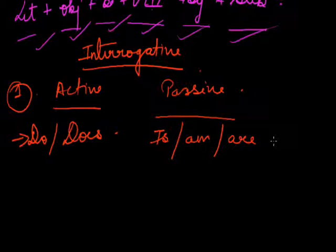If a question starts with 'does': 'does a good posture give proper shape?' The passive sentence is 'is proper shape given by a good posture?' So if a question starts with 'do' or 'does,' the passive is going to start with 'is,' 'am,' or 'are.'